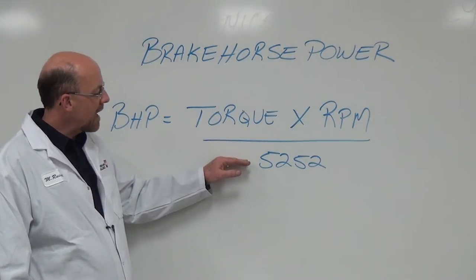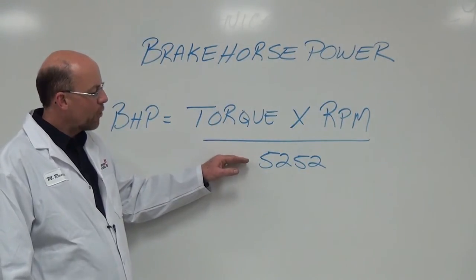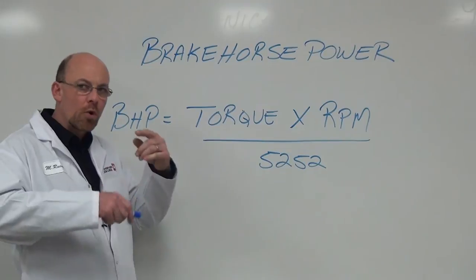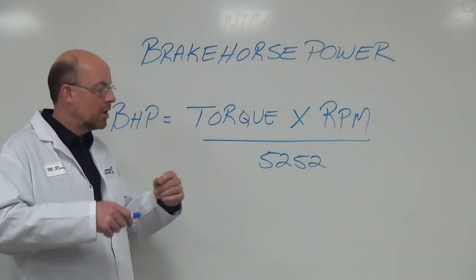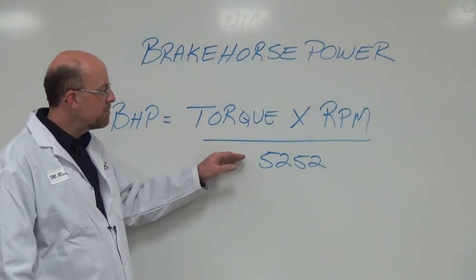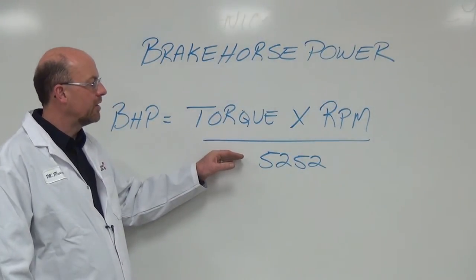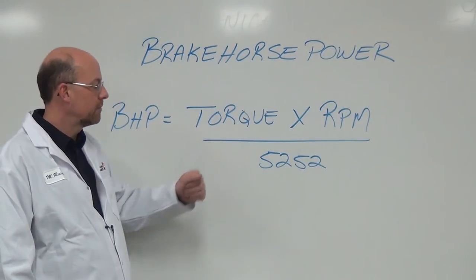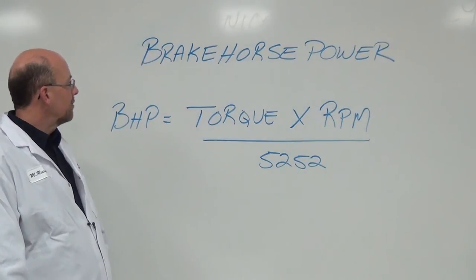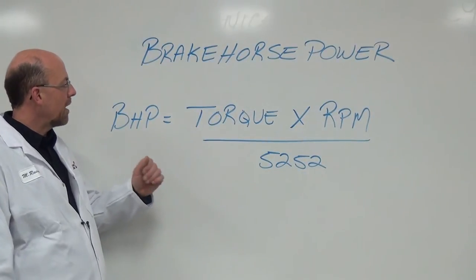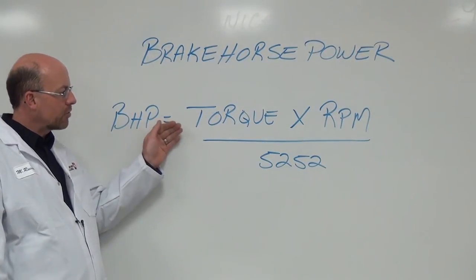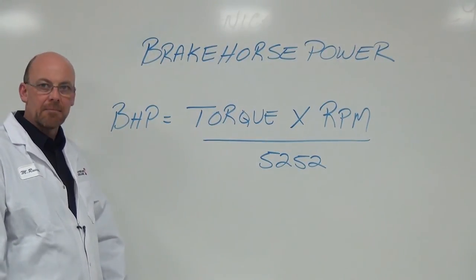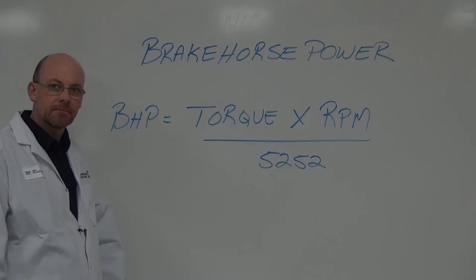which is a mathematical formula that was established for a rotating member. This is going to be based on the rotation of the crankshaft. So brake horsepower equals torque times RPM divided by 5252.